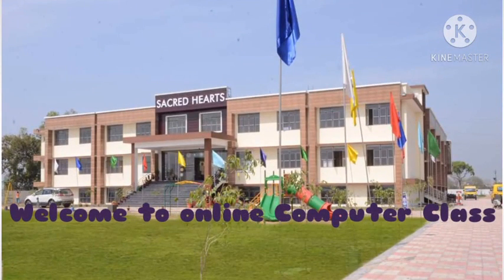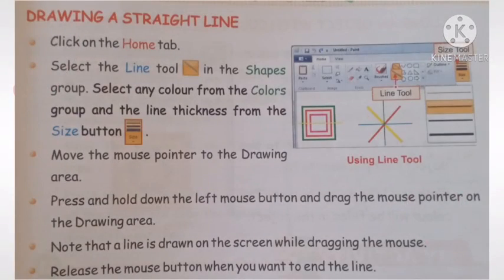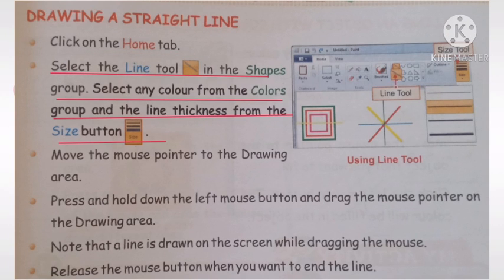Hello students, welcome to Sacred Heart's online computer class. I am your computer teacher Himani Messi. In this class we are going to continue our seventh chapter, 'Fun with Paint.' We'll learn how to draw a straight line. To draw a straight line, first you need to click on the home tab, then select the line tool in the shapes group, select any color from the colors group, and the line thickness from the size button.